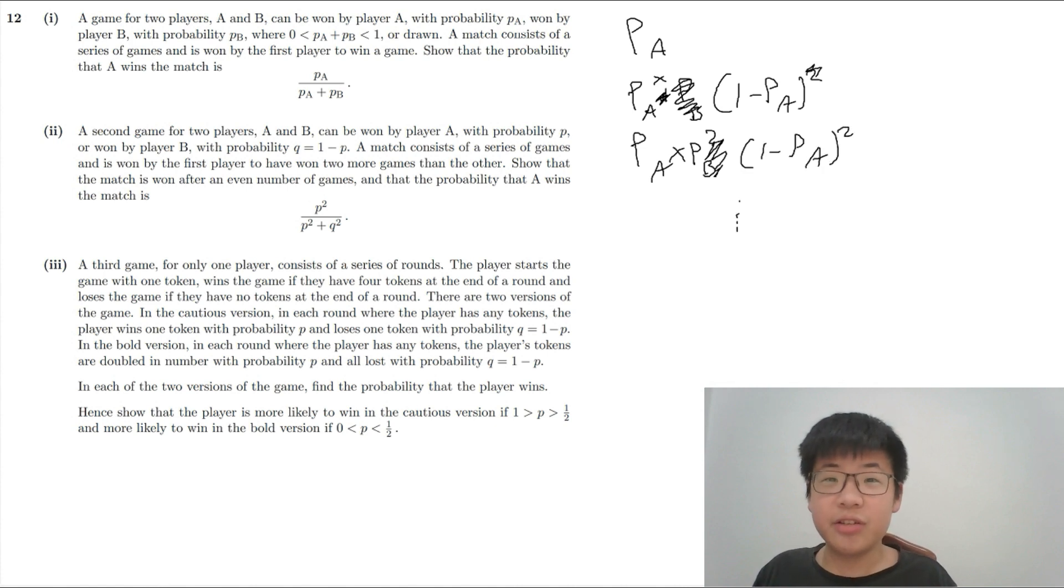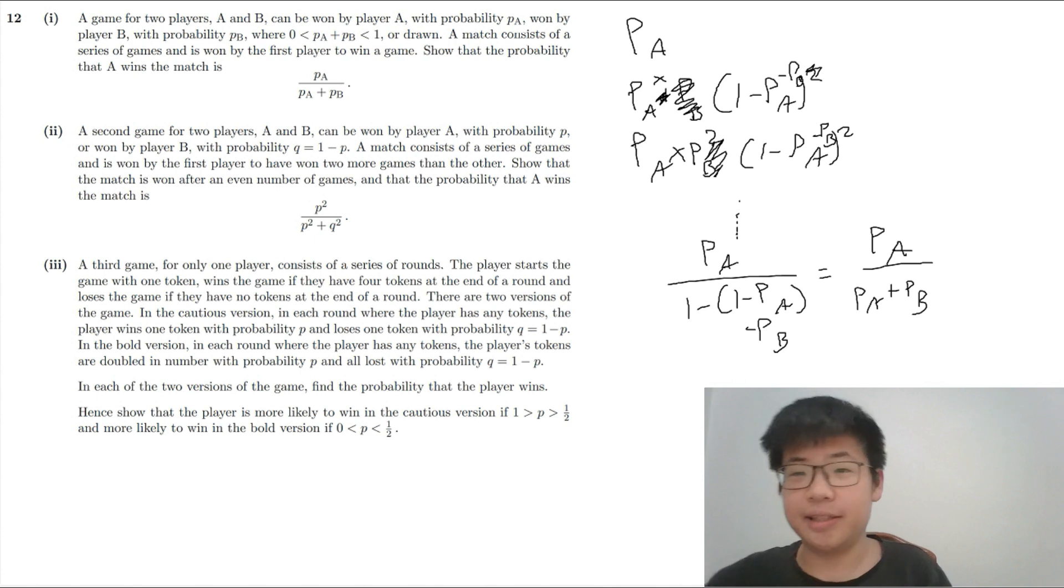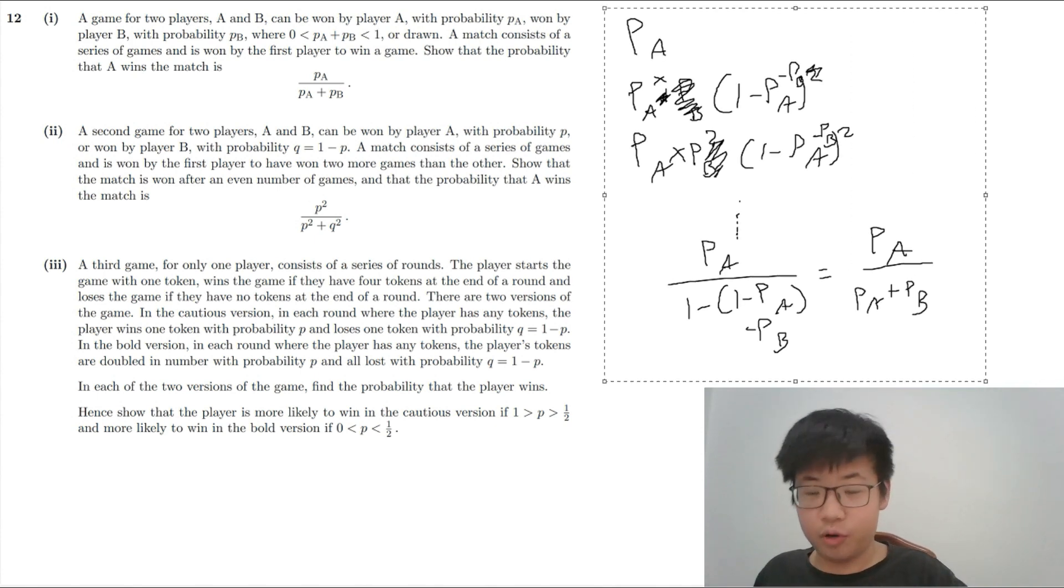And then we continue and get PA over 1 minus (1 minus PA). And then what do we do now? We forgot that we should add PB in here because PB needs to be put into account in the drawn option. So this means that A will be the first player to always win the match. So this becomes PA over PA plus PB. We are currently done. Now let us take this away for a while.